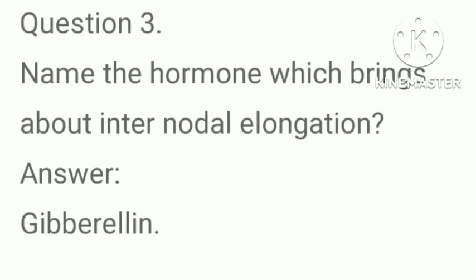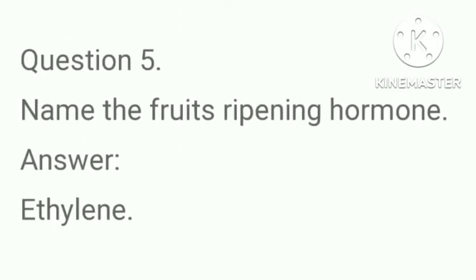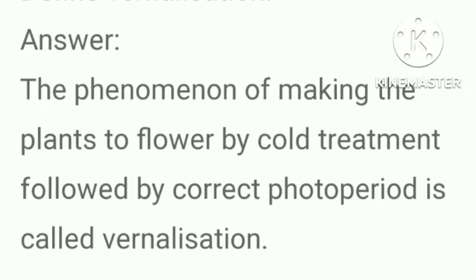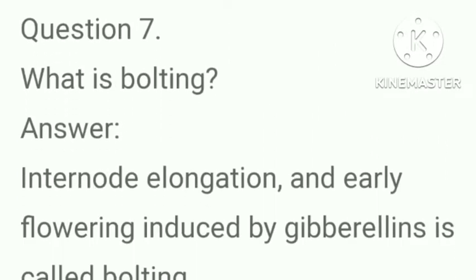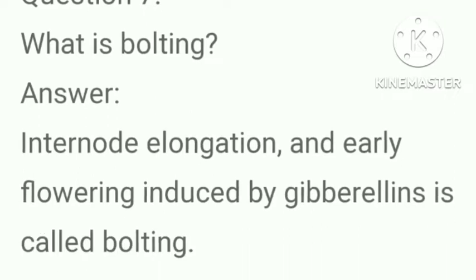Name the hormone which brings about internodal elongation. Answer: Gibberellin. Which hormone is responsible for premature withering of fruits? Answer: Abscisic acid. Name the fruit ripening hormone. Answer: Ethylene. Define vernalization: the phenomenon of making plants flower by cold treatment followed by correct photoperiod is called vernalization.